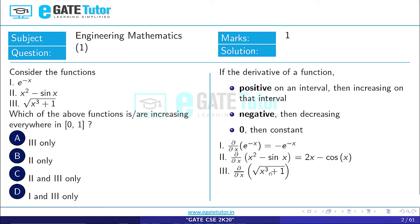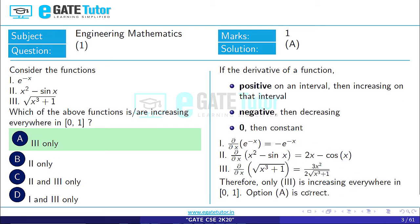Third, d/dx(√(x³+1)) = (1/2)(x³+1)^(-1/2) · 3x². We know that this function is always increasing.